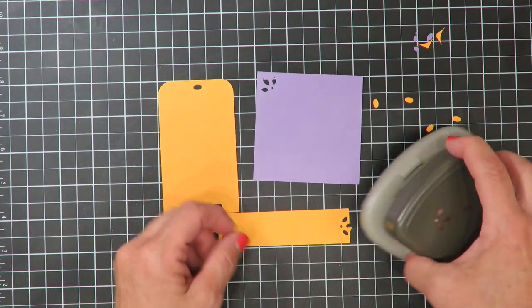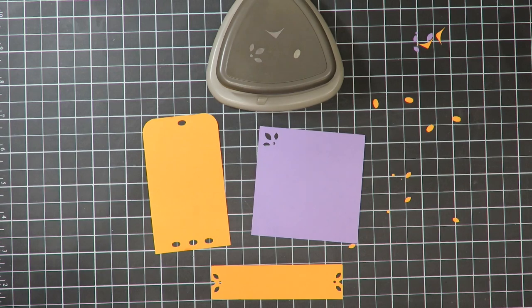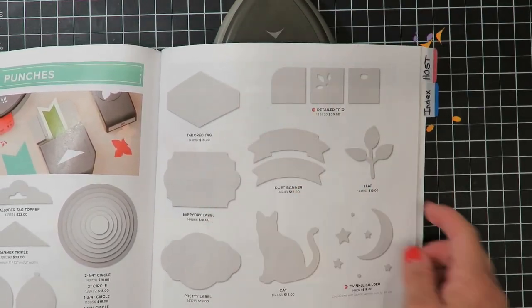So we've got ways that you can use the brand new detailed trio punch. You're going to be able to find this punch in the Stampin' Up catalog here on page 211. It's here at the top.